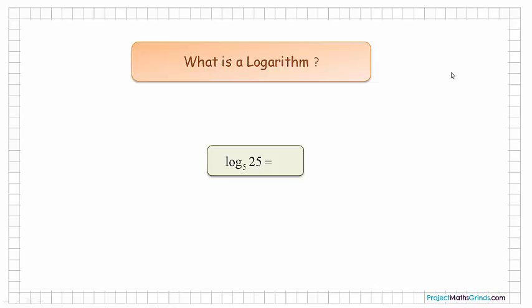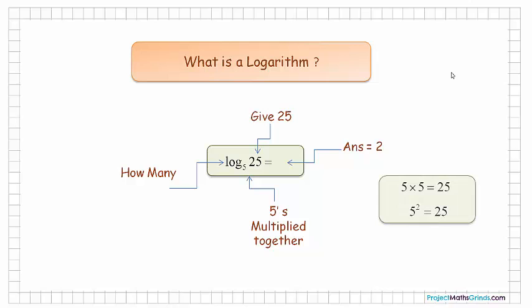Let's consider log of 25 to the base 5. Again, this is like asking the question: how many 5's, multiplied together, give 25? And in this case, the answer is 2. Again, 5 by 5, or 5 squared, is equal to 25.